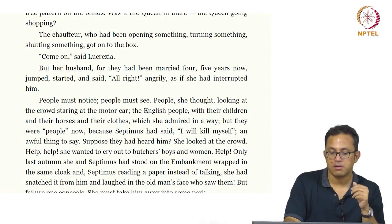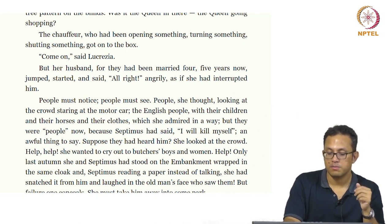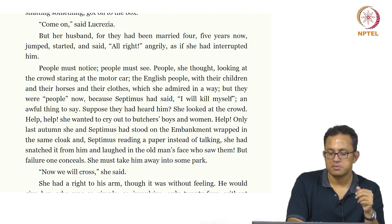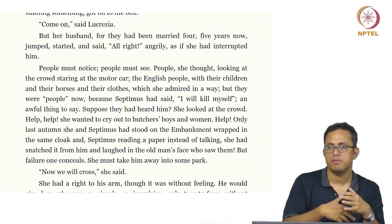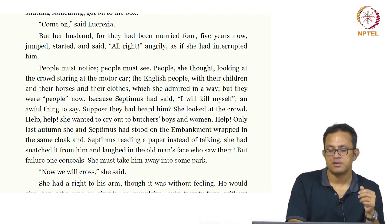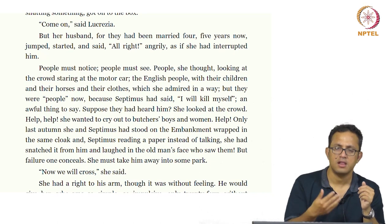Lucresia thinks: 'People must notice, people must see — but there were people now because Septimus had said I will kill myself, an awful thing to say. Suppose they heard him — help, help, she wanted to cry. Only last autumn she and Septimus had stood on the embankment, wrapped in the same cloak, and Septimus reading a paper instead of talking, she had snatched it from him and laughed.' The transition of Septimus from a warrior, a war hero, to someone who is shivering and a nervous wreck is constantly contrasted with his glorified romantic past.